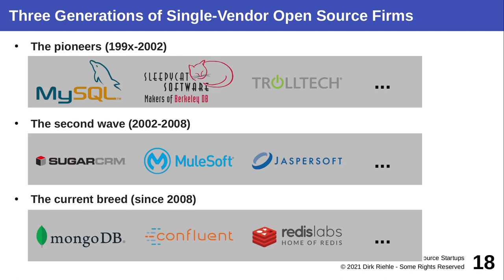The second wave was still pre-cloud — classic enterprise sales, license fee and maintenance revenue, but only after the user had been a user of the open source version first. Then the cloud arrived and took more specific forms after the 2008-2009 recession. Well-known third-generation single-vendor open source firms where the main product is in the cloud include MongoDB, Confluent, and Redis Labs. Not surprisingly, company names and product names are very close to each other.